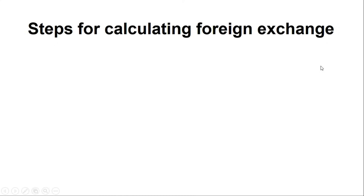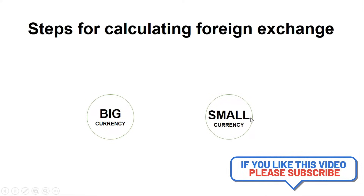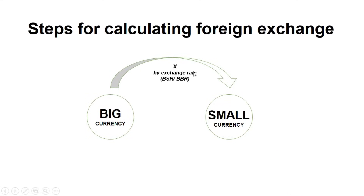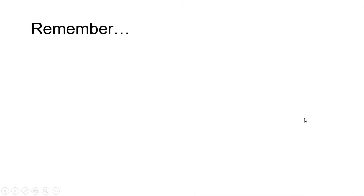Here are the steps for calculating foreign exchange using a model I've found simple in my classes. If you are moving from a bigger currency to a smaller currency, you multiply by the exchange rate — you go to your currency table and identify either BSR or BBR as per the instruction, then multiply by that rate. If you are moving from a smaller currency to a bigger currency, you divide by the exchange rate.